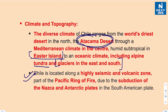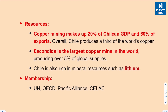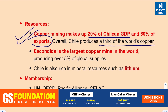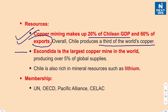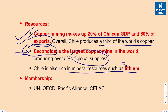Chile is located along a highly seismic and volcanic zone that is part of the Pacific Ring of Fire, due to the subduction of the Nazca and Antarctic Plates beneath the South American Plate, resulting in a lot of volcanic activity. Regarding resources, copper mining makes up 20% of Chilean GDP and 60% of its entire exports. Overall, Chile produces one third of the world's copper. Escondida is the largest copper mine in the world, producing over 5% of global supplies, and it is situated in Chile. The country is also rich in lithium, which is very important for the production of lithium-ion batteries.